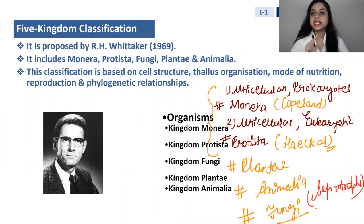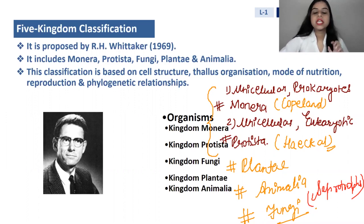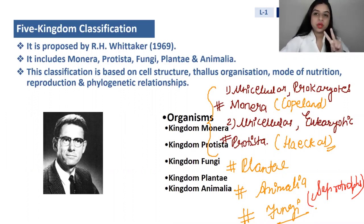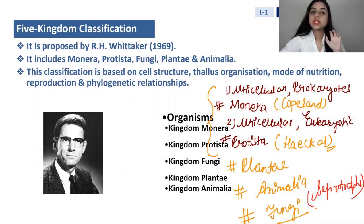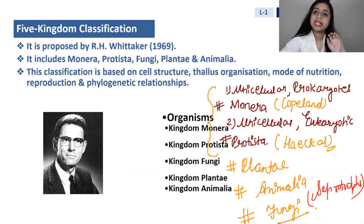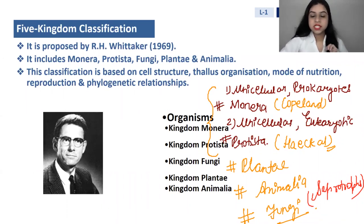After all this analysis, Whittaker finally concluded that there should be not 2, not 4, but 5 kingdoms total. In NCRT, you can see the five kingdom system represented in the form of a hand, where you can learn and judge the characters of each kingdom.